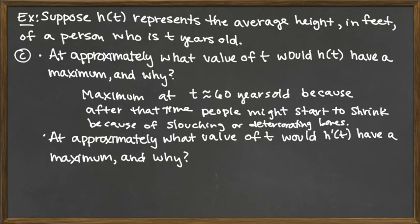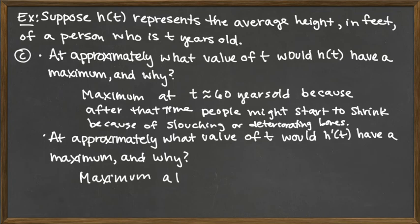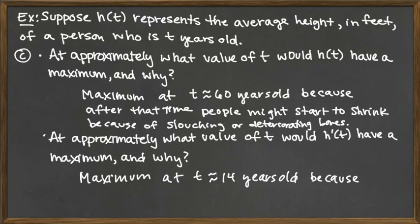At approximately what value of t would h prime of t have a maximum and why? H prime is talking about the rate of change, so when would the rate of change be the biggest — that is, when is a person growing the fastest? That would be around a growth spurt. So the maximum would be at approximately t equals 14 years old, because that would be the age of a growth spurt.